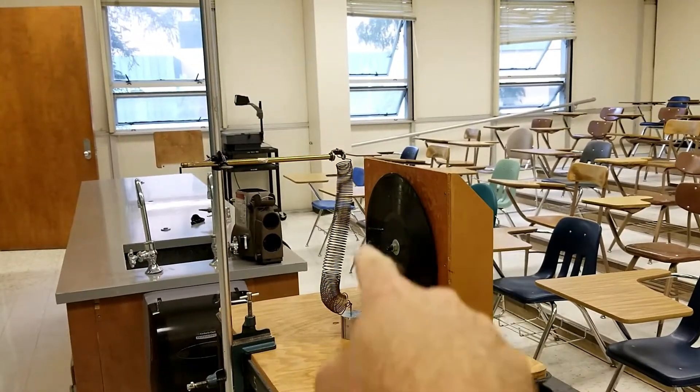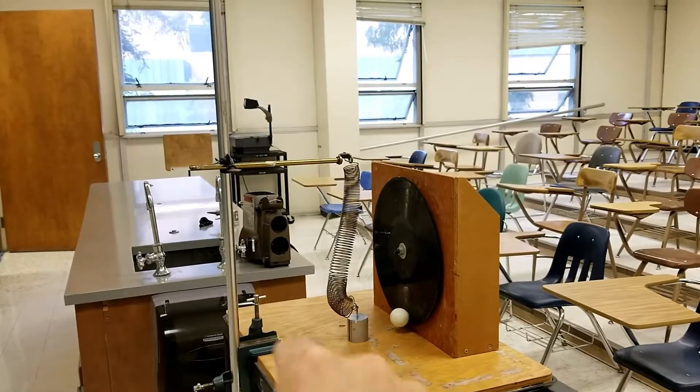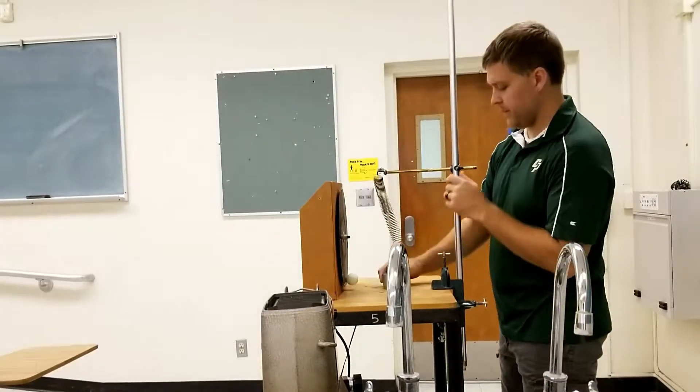Using this turntable with a ping pong ball glued to it, this mass spring oscillating system, and this projector, you can actually compare the periods of circular motion with that of a simple harmonic oscillator.